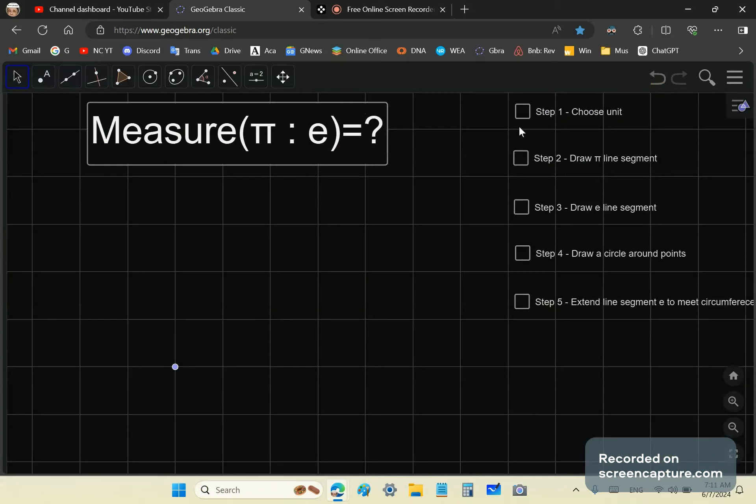Step one is you choose a unit, this little green line. You can make this any length you like, but I've made it one. It doesn't have to be a particular length.